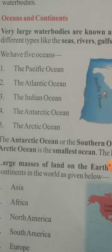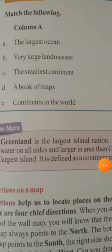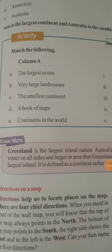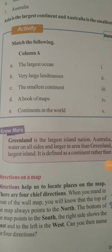We have learned about five oceans, and now we will learn about the seven continents. How many continents are there? Seven continents: Asia, Africa, North America, South America, Europe, Antarctica, and Australia. Asia is the largest continent and Australia is the smallest one.